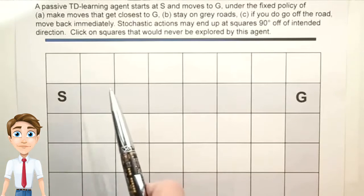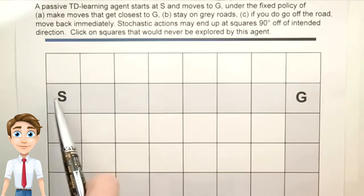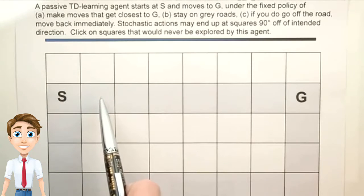which says, first, make moves that get closest to G. So if we started here, we'd want to go in this direction because it's closest to G.